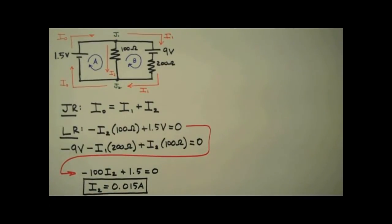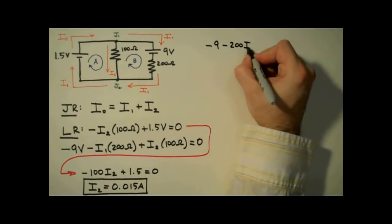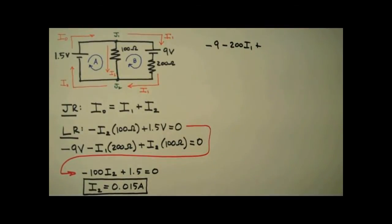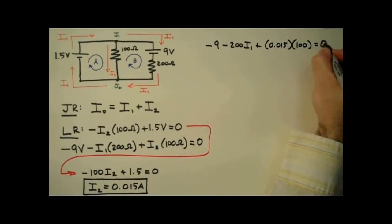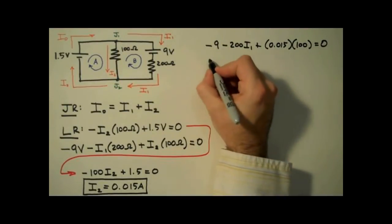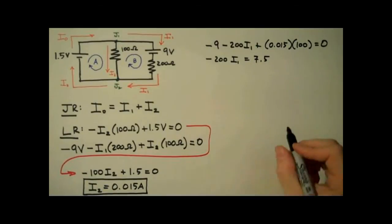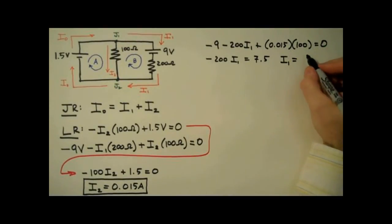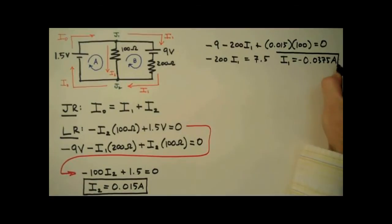Now I'm going to use this value to solve for I1 by plugging it into the loop B equation. If you're comfortable with linear algebra, you may want to set these equations up in a matrix — that is often a simpler way to handle the algebra. In this case, I'm just going to plug and chug. This product is equal to 1.5 volts. Moving it to the other side, negative 200 I1 equals positive 7.5. So I1 equals negative 0.0375 amps, or negative 37.5 milliamps.